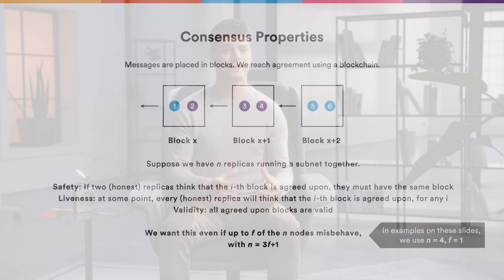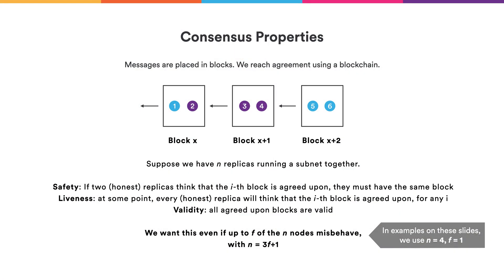We're going to reach consensus by using a blockchain. The messages that a subnet should process are grouped together and placed in blocks, and each block points to a previous block, thereby forming a blockchain. The security we want is that all the replicas agree on the blockchain, thereby giving an ordering of the messages to execute.